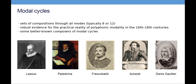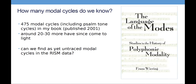Important composers wrote modal cycles, but how many modal cycles are there in total? I investigated that for my PhD research, and by that time I found 475 modal cycles — including polyphonic cycles through psalm tones or psalm tone keys. Since then, around 20 to 30 more have come to light. Now my question is: can we find as yet untraced modal cycles in the RISM data? Untraced meaning not traced by me — other people may have found them, of course.